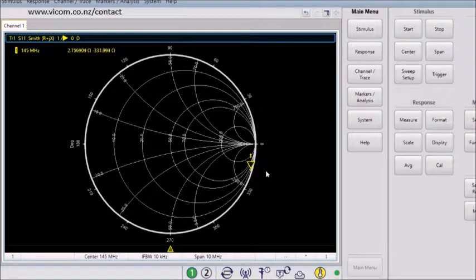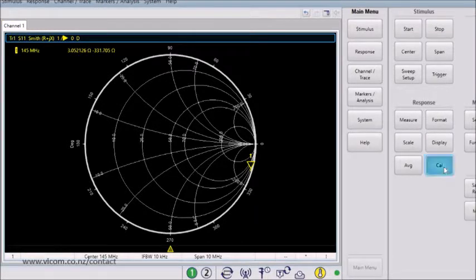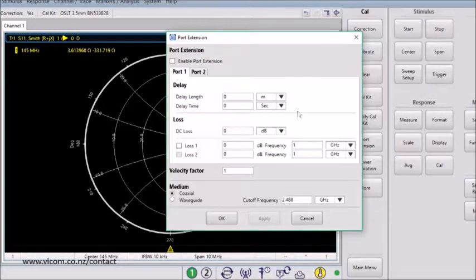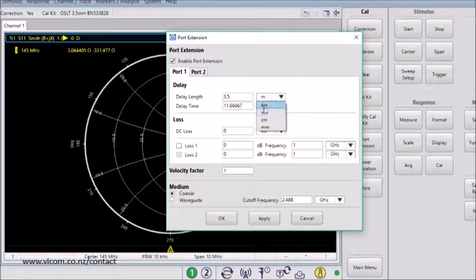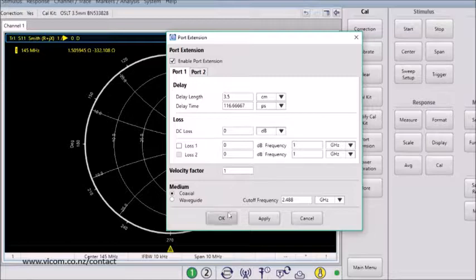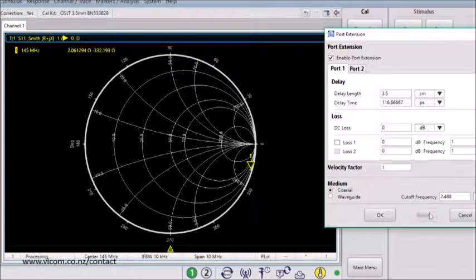Let's go ahead and add a port extension and see if I can get our marker to lie on the open mark. So, I'll go to Cal, Port Extension, Enable. Let's try 3.5 centimeters. And click Apply. Let's see where this puts us. Almost there.